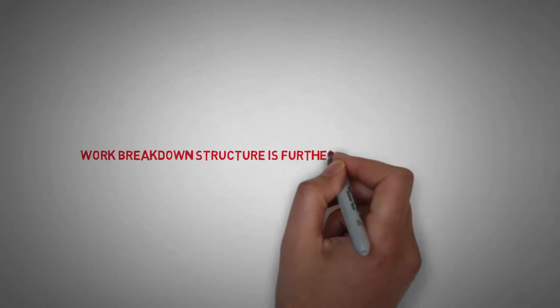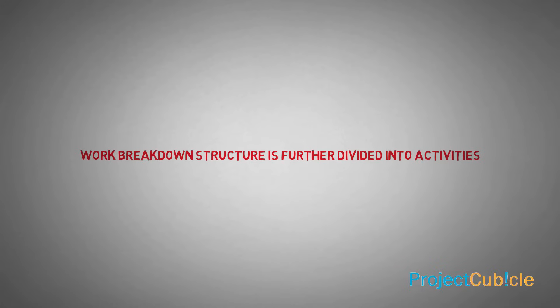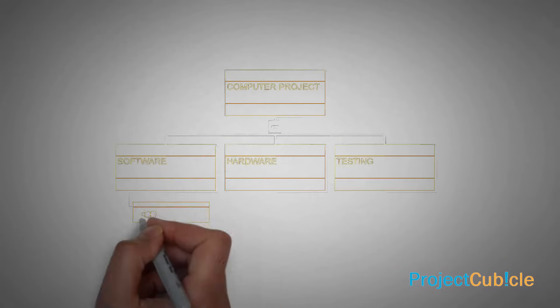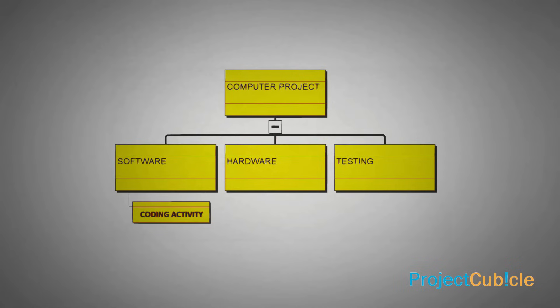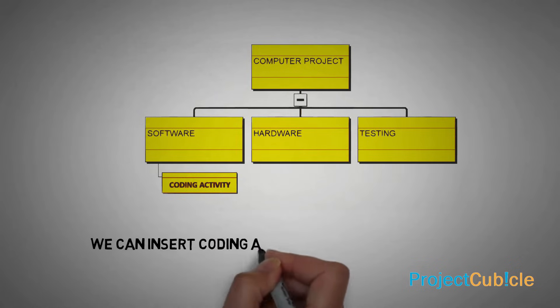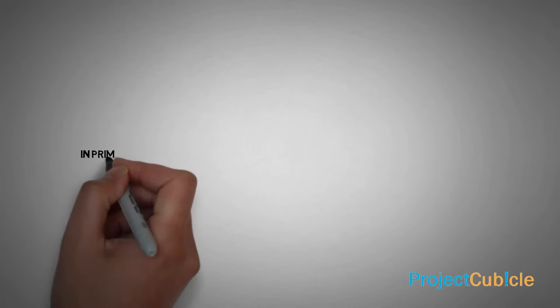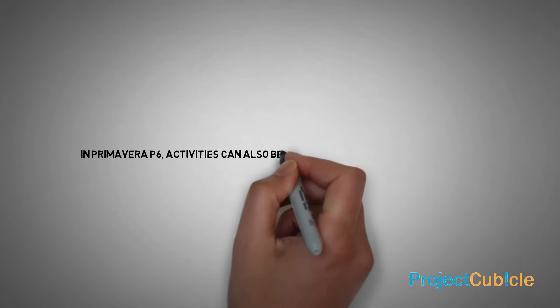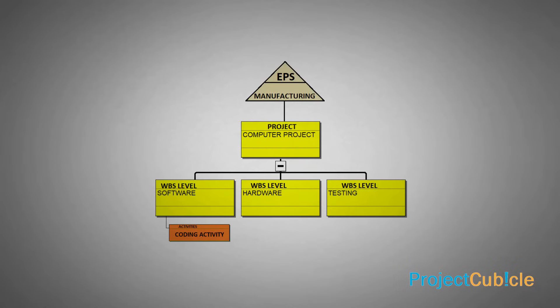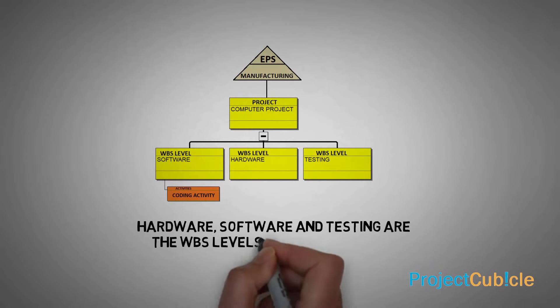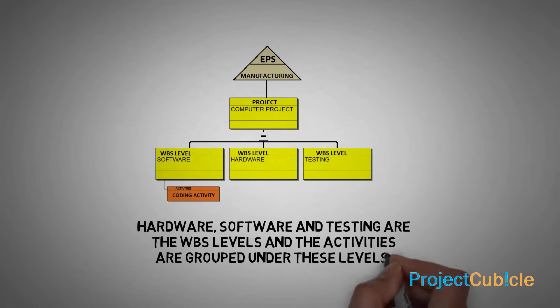The Work Breakdown Structure is further divided into activities. For example, under the Software WBS level of our computer project, we can insert coding activities. In Primavera P6, activities can also be divided into sub-levels or activities. In our example, EPS is Manufacturing, and the computer project is under the Manufacturing EPS. Hardware, software and testing are the WBS levels, and activities are grouped under these levels.